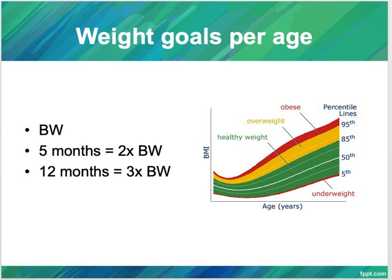Weight goals per age are also important throughout the first year of life. Birth weight will be doubled by 5 months and tripled by 12 months. For example, a birth weight of 6 pounds will be 12 pounds by 5 months and 18 pounds by one year.